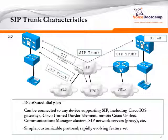In this type of environment, when you use a SIP trunk, you need a distributed dial plan because each location must have a dial plan to route the call. It can be connected to any device supporting SIP — a simple and customizable protocol, rapidly evolving with a feature set. SIP trunk is becoming the protocol of choice whenever you're trying to establish PSTN connectivity over an IP network.